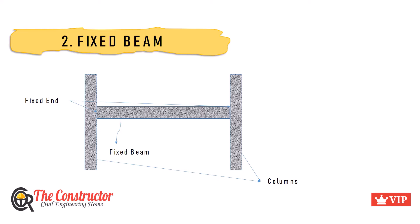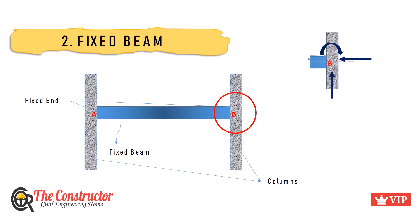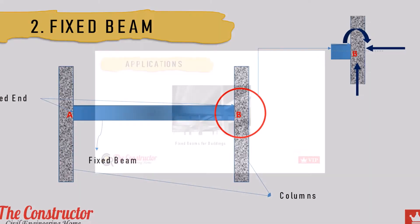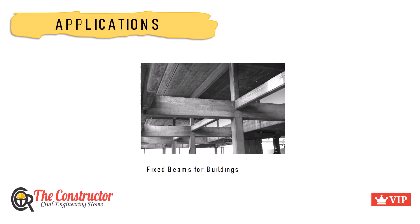As shown in the figure, a beam AB is constructed monolithic with two columns. Looking at support B, the reactions created are along the horizontal, vertical, and rotational movement. So it is clear that a fixed support provides resistance against vertical, horizontal, and rotational movement. Fixed beams are widely used for buildings whose beams are constructed monolithic with the columns or the walls.